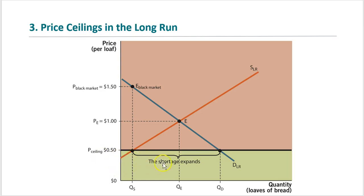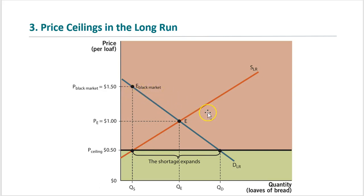Looking at the price ceiling in the long run, we see a new quantity supplied and a new quantity demanded, resulting in new shortages. In the long run the shortage gets larger. The black market price is $1.50. Long run black market prices are less than before ($2 in the short run), since consumers have had time to find alternatives.